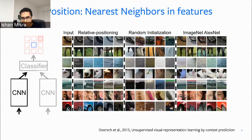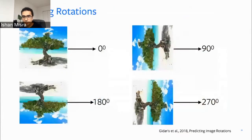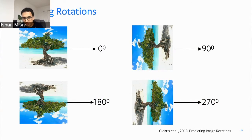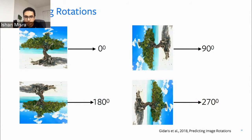Another simple task — and it works so well that most people are still astounded by it — is rotation prediction. You take an image and rotate it randomly: 90 degrees, 180 degrees, 270 degrees, or not at all. You feed this image to a network and ask it to solve a four-way classification problem predicting which rotation was applied. This task is really, really powerful — it outperforms tasks like relative position, and up until two or three years ago was one of the state-of-the-art tasks in computer vision representation learning.